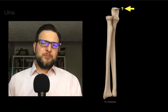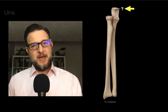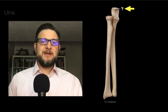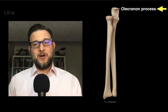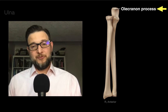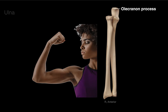This proximal process is the part that forms the elbow. In Greek, elbow and process become olecranon process — the head of the elbow. The olecranon process is an attachment and insertion point for the triceps brachii, and in surface anatomy it's that bony prominence you rest your elbows against on a desk.